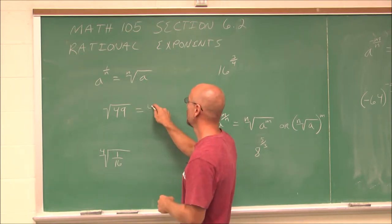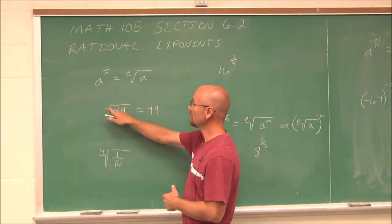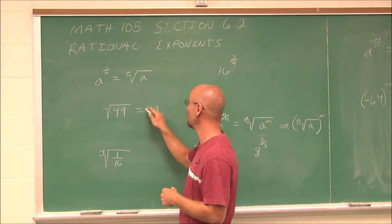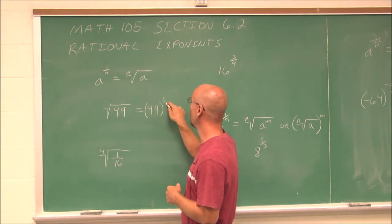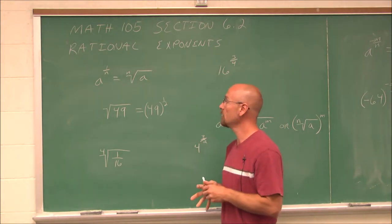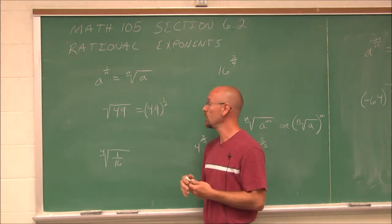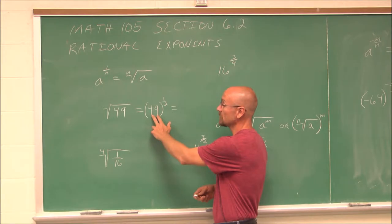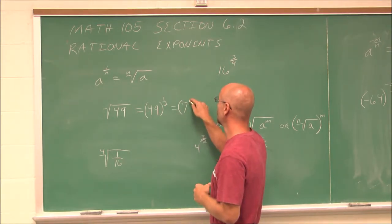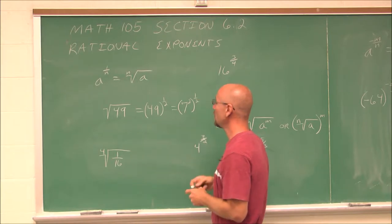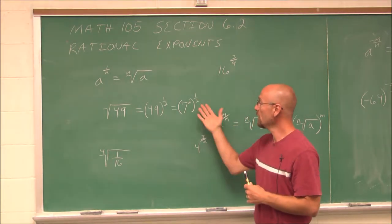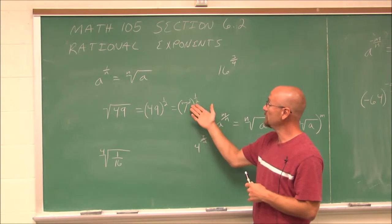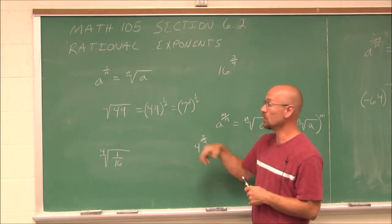We have 49 raised to the 1/2 power, where the index is a square root of 2. Why would we want to convert a radical to an exponent? Well, one reason is we can rewrite it as a factor. This is a perfect square of 7 squared raised to the 1/2 power. And if we know our rules of exponents, we can simplify it a lot easier this way than working with a radical.